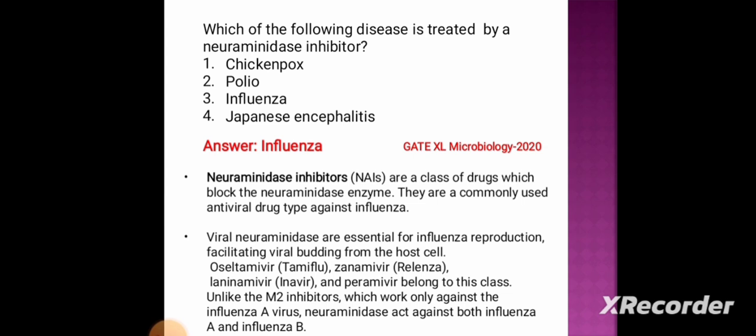Oseltamivir, zanamivir, and peramivir belong to this class. Unlike the M2 inhibitors, which work only against influenza A virus, the neuraminidase inhibitors act against both influenza A and influenza B.